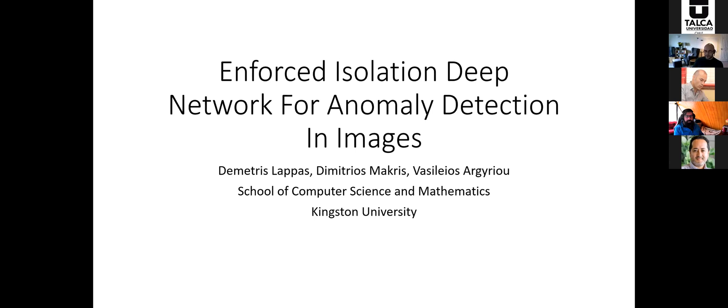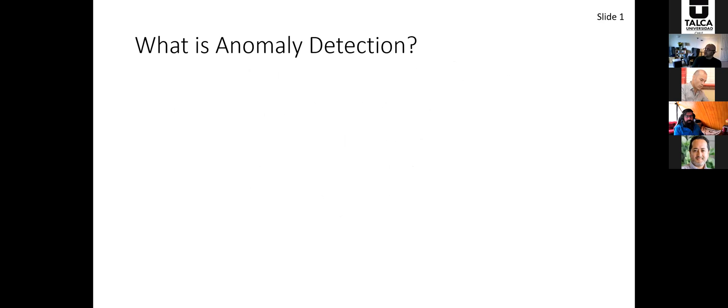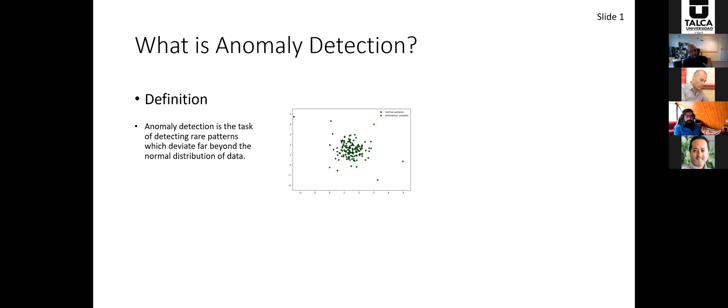I'd like to begin by asking: what is anomaly detection? It's quite difficult to define, but an excellent way is to say it is the task of detecting rare patterns which deviate beyond the normal distribution of data — and when we say normal distribution, we don't mean it in the statistical sense; we mean what is considered to be normal. In the visual example, the green dots represent normal samples and the red dots represent anomalies.